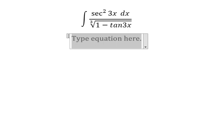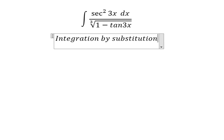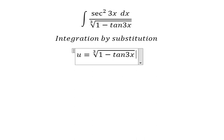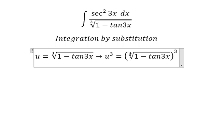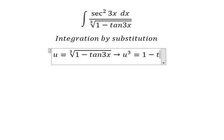We need to use integration by substitution. So I will put u equals to this one. I will put the power 3 for both sides to cancel the cube root. And we have 1 minus tan 3x.